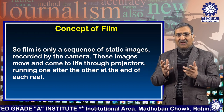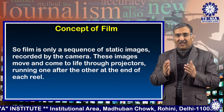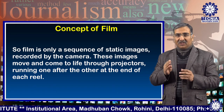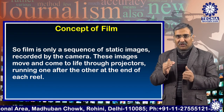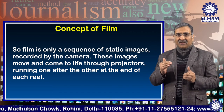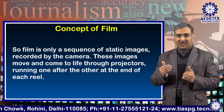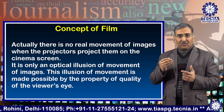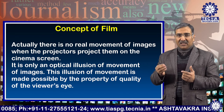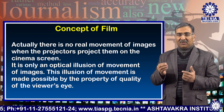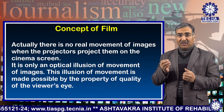Film is only a sequence of static images recorded by the camera. These images move and come to life through projectors running one after other at the end of each reel. Actually, there is no real movement of images when the projectors project them on the cinema screen. It is only an optical illusion of movement of images.